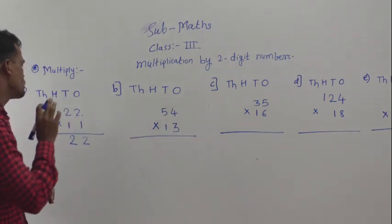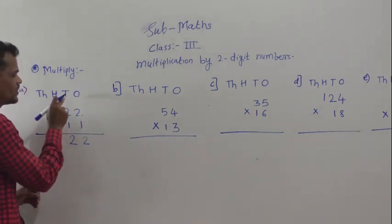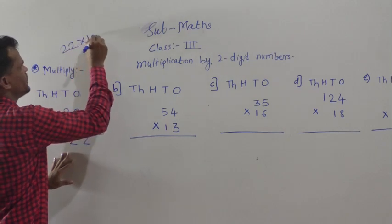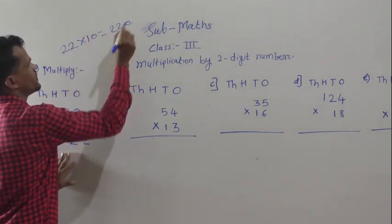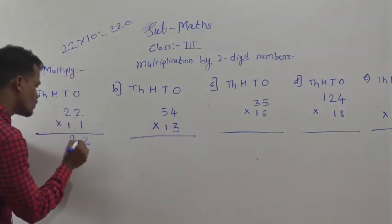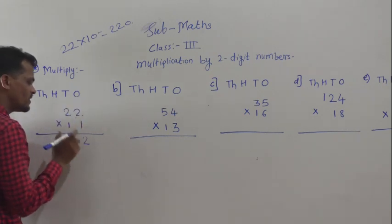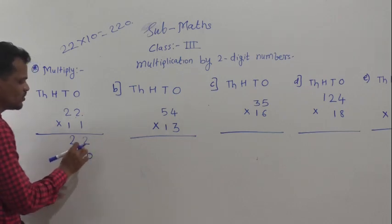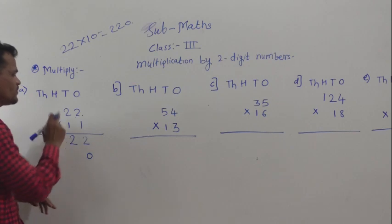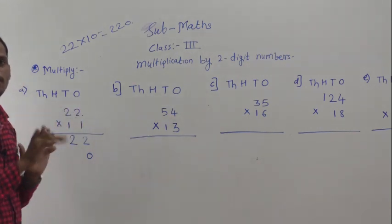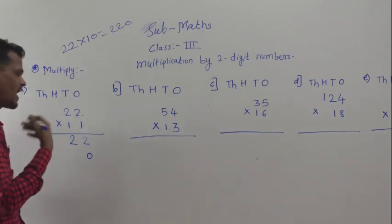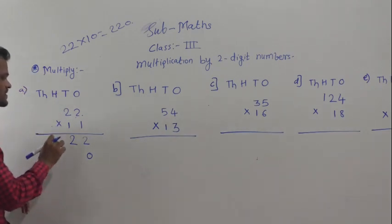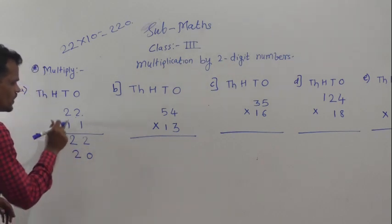Step two: multiply 22 by 10. You know that any number — suppose 22 multiply by 10 — then you will get 220. So before multiplying 22 by 1, write 0 at the ones place. We are multiplying 22 by the tens digit. If any number is multiplied by 10, then the answer has a 0 at the ones place. So I have written 0 here, now multiply: 1 two is 2 and 1 two is 2.